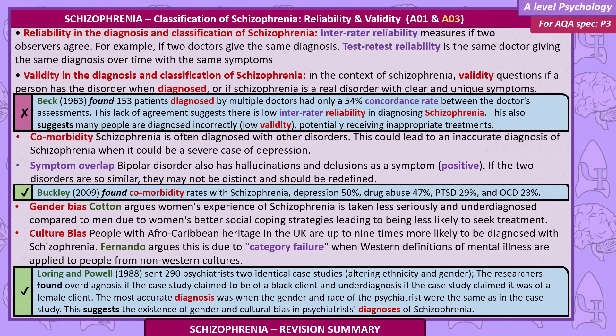Comorbidity: schizophrenia is often diagnosed alongside other disorders. This could lead to an inaccurate diagnosis of schizophrenia when it could be a severe case of depression. Symptom overlap: bipolar disorder also has hallucinations and delusions as symptoms. If the two disorders are so similar, they may not be distinct and should be redefined.